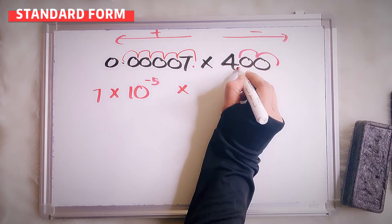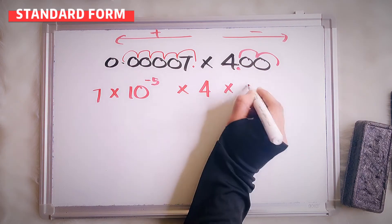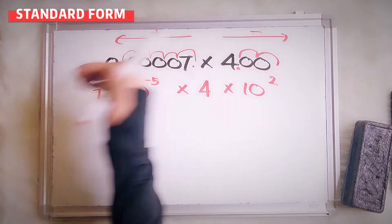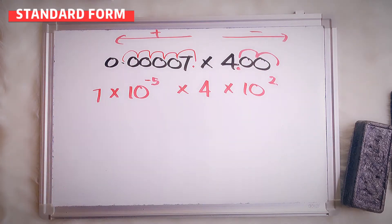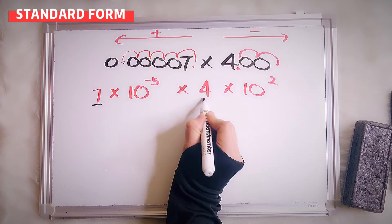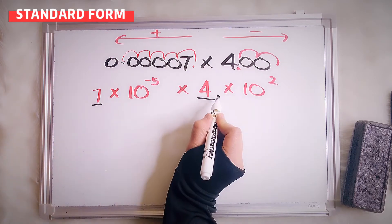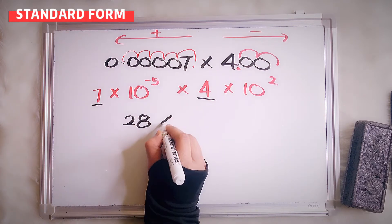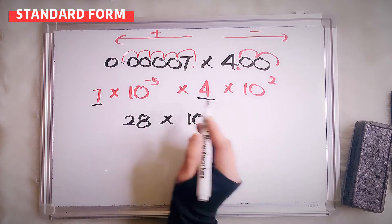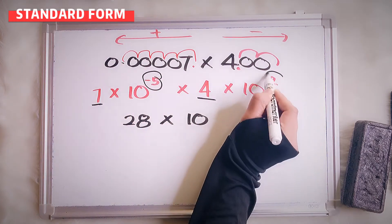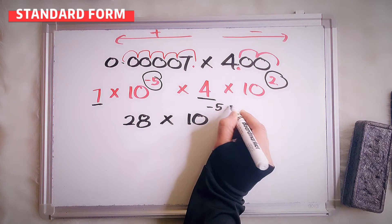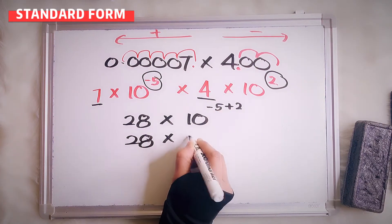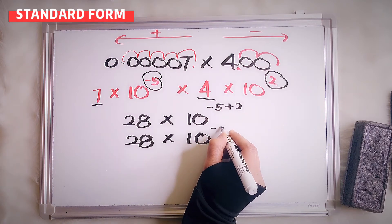For 400: count 1, 2 — so here is 4 times 10 to the power of 2. Since we move to the left side, it is positive. Now focus on the numbers: multiply 7 times 4, you will have 28. Multiply the 10s — this is multiply, so you have to add the powers: negative 5 plus 2.